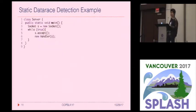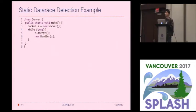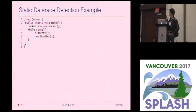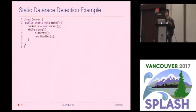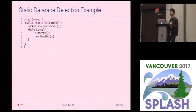In the rest of the talk, I'm going to use race detection as an example to explain how our approach works. Here I have a highly simplified FTP server program — this is just for elaboration. In the paper, we have much more advanced examples extracted from the Apache FTP server program.